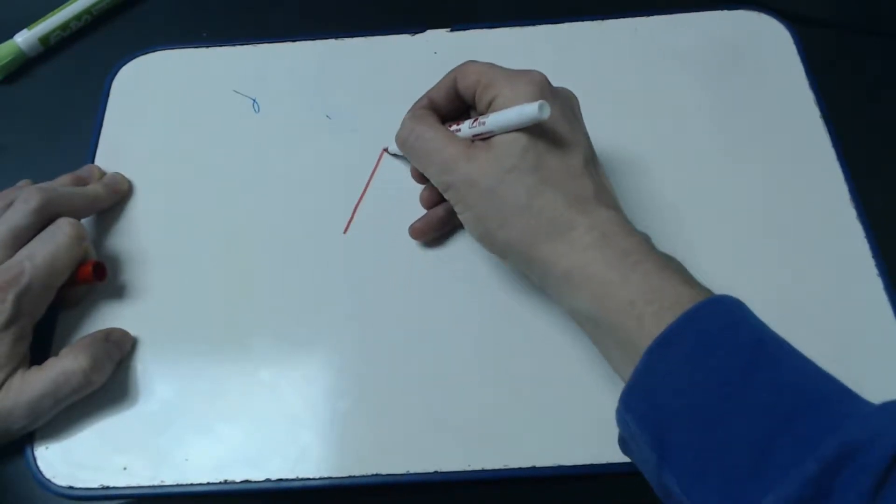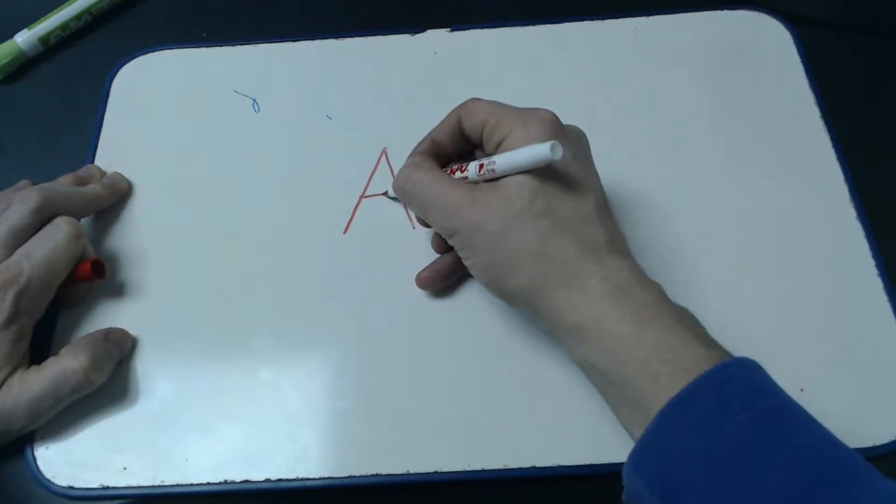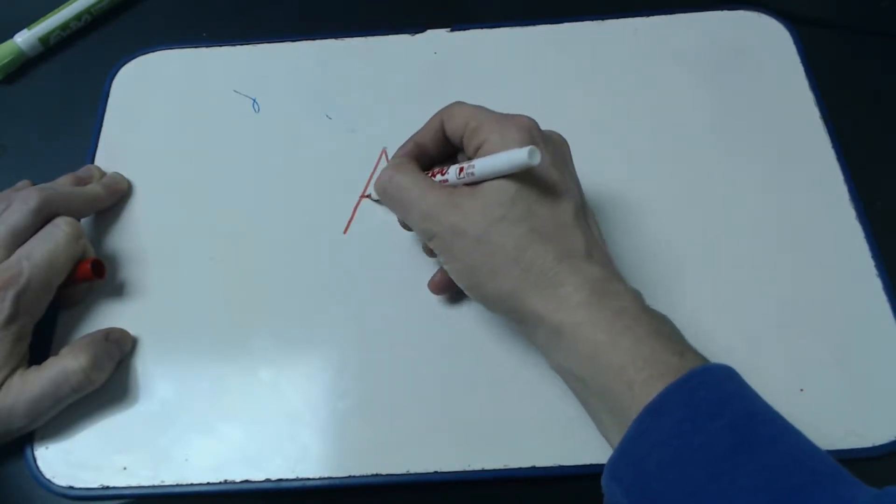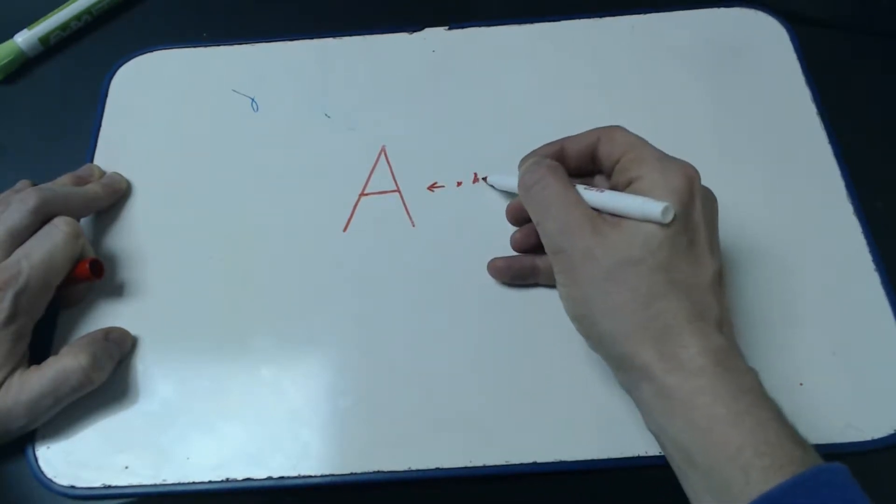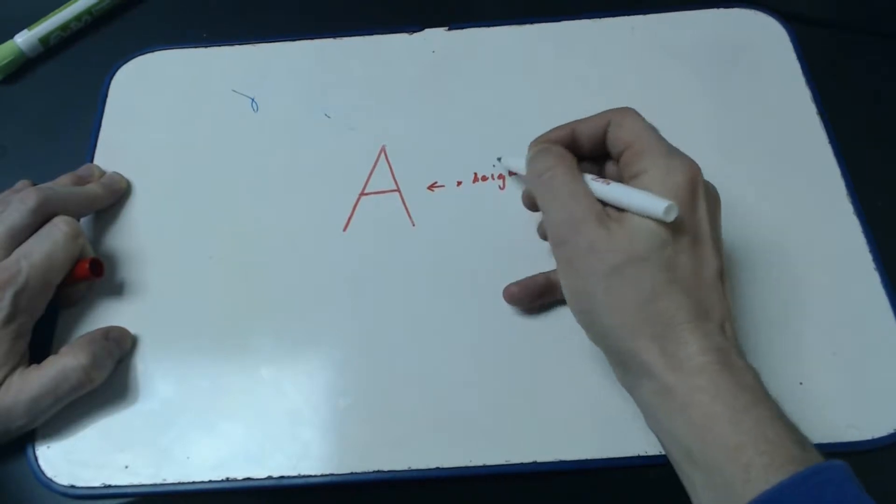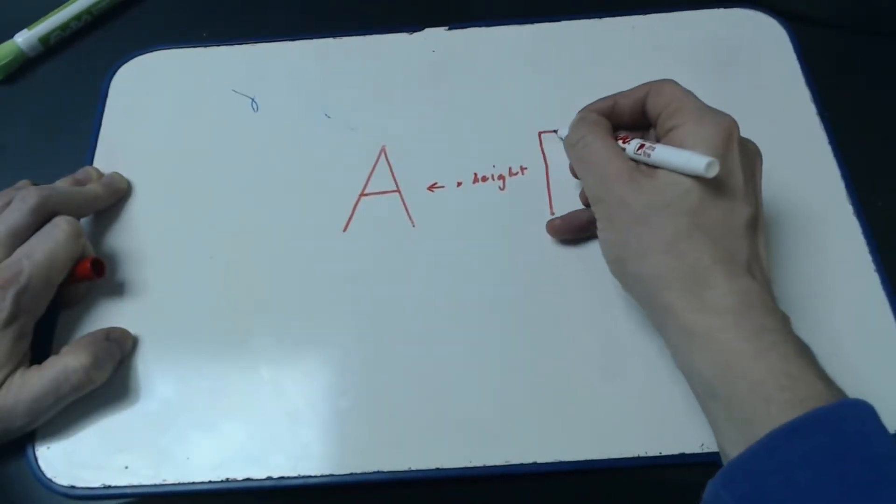If we're talking about the letter A, for example, and we're looking at this piece that goes across, this is what I would refer to as the x-height. If you were to make some other letters here, let's say an F,